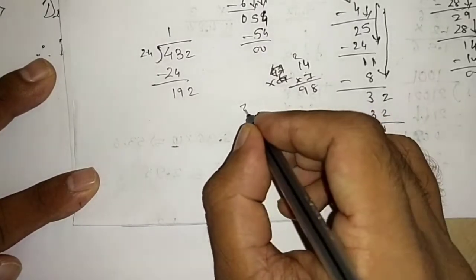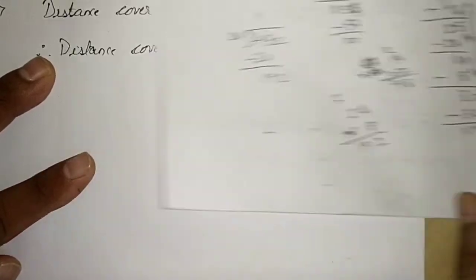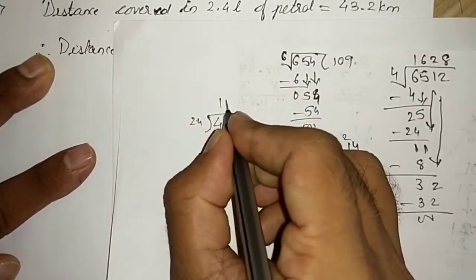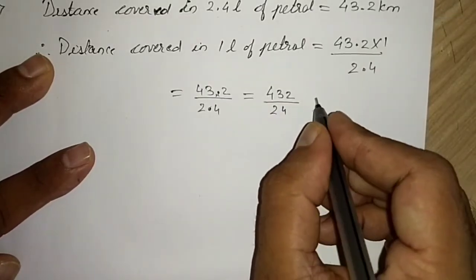8 times 4 is 32, 8 times 2 is 16 plus 3 is 19. Okay, so we got 18. So it will cover 18 kilometers.